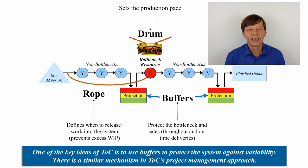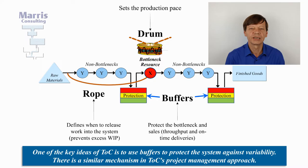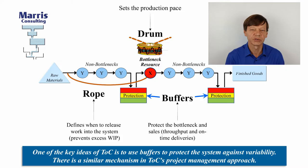Once you've done that, you're going to implement the rope. The rope is there to pull the material into the factory, into the system, depending on what the constraint is going to do and is capable of doing, so that you don't flood the beginning of the flow by launching work into the system that the capacity constraint won't be able to digest. You don't want to aim for full utilization of non-bottlenecks of course.